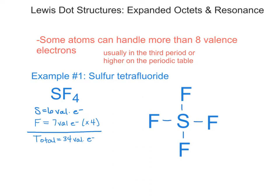I've placed eight valence electrons with the single bonds, so 34 minus eight leaves 26 remaining. I'm going to fill up all of my fluorines with the remaining six valence electrons each that they need. But once I finish with that, I've only placed 32 electrons total, so I have two more electrons left to place. Since sulfur is in the third period or higher, it can handle more than eight valence electrons, so I'm going to put those additional two valence electrons right onto my sulfur.